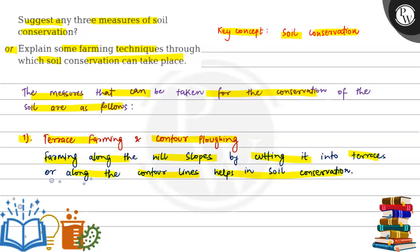Terrace farming is generally done in hilly areas where slopes are converted into terraces. Contour lines means same elevation where farming is done. Due to this, water discharges into the ground, productivity increases, and soil is conserved.